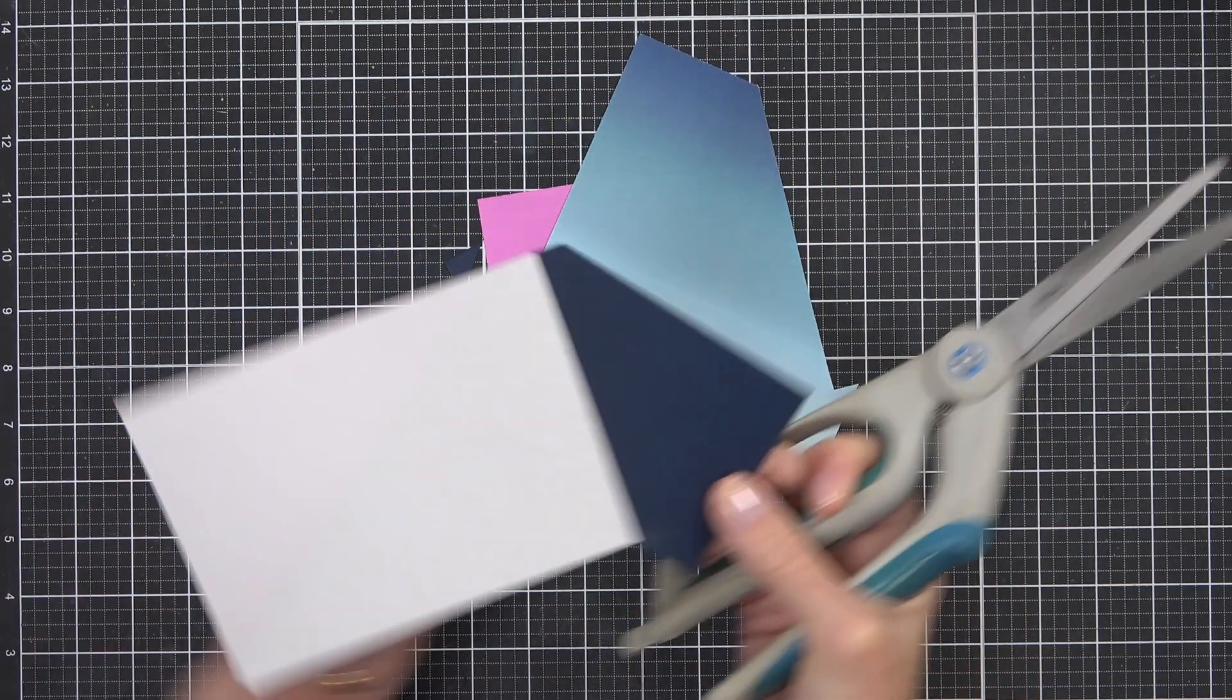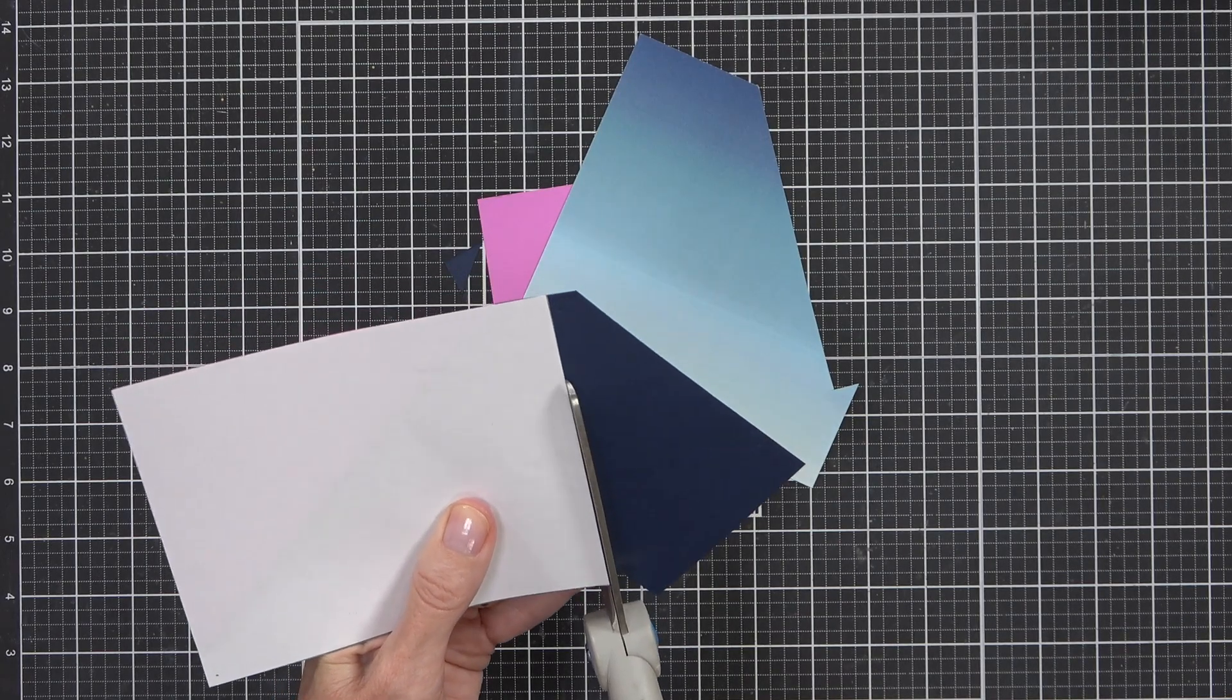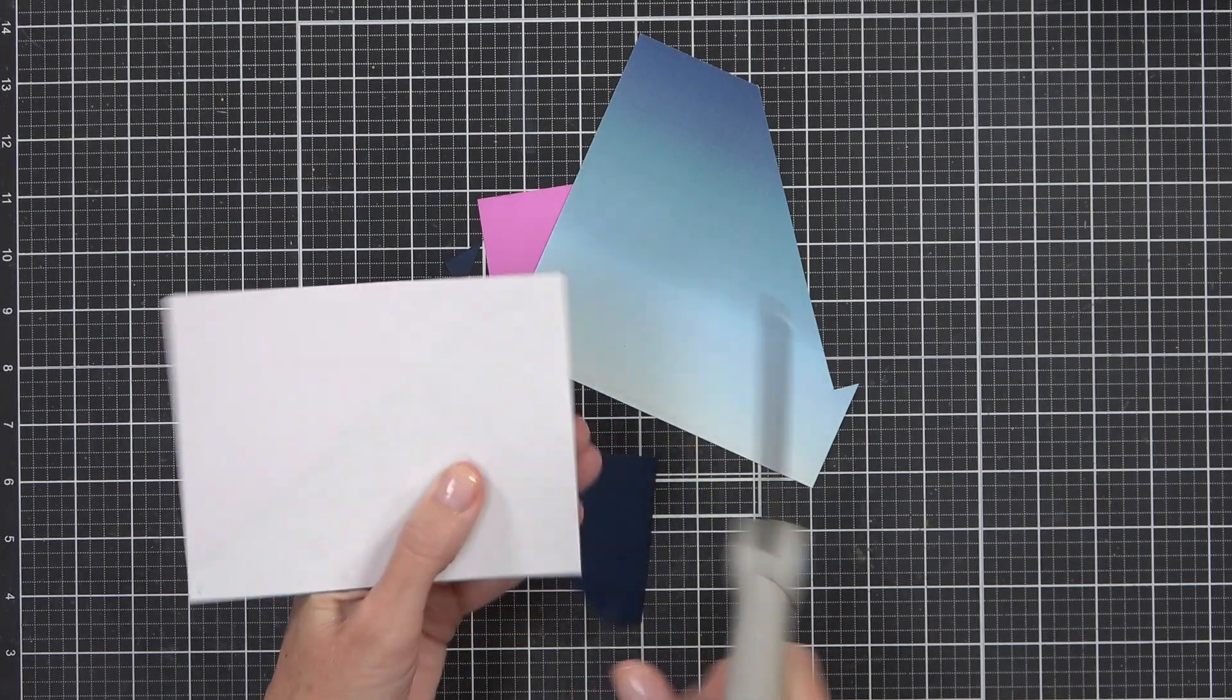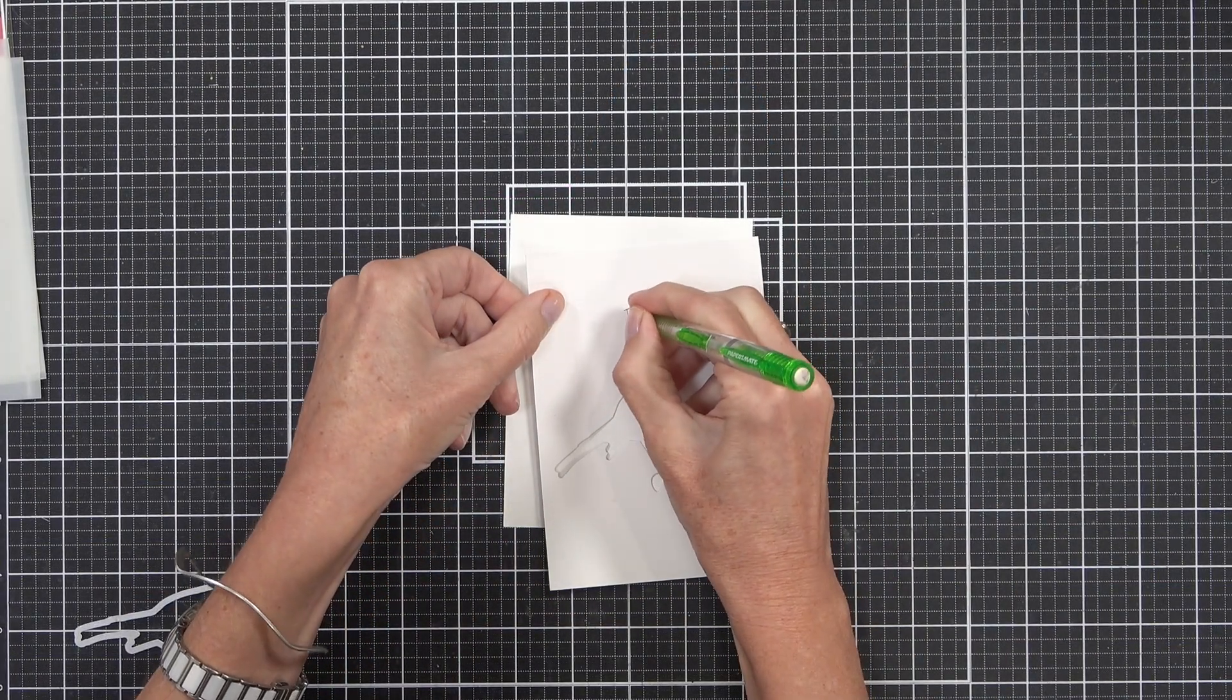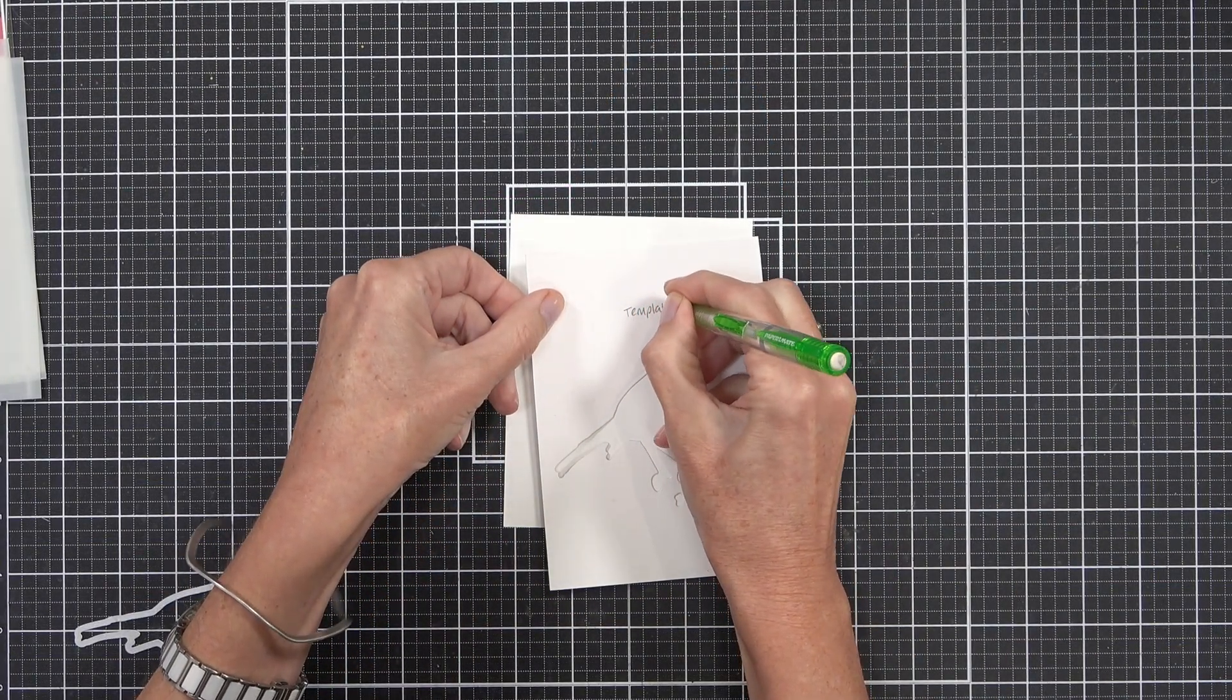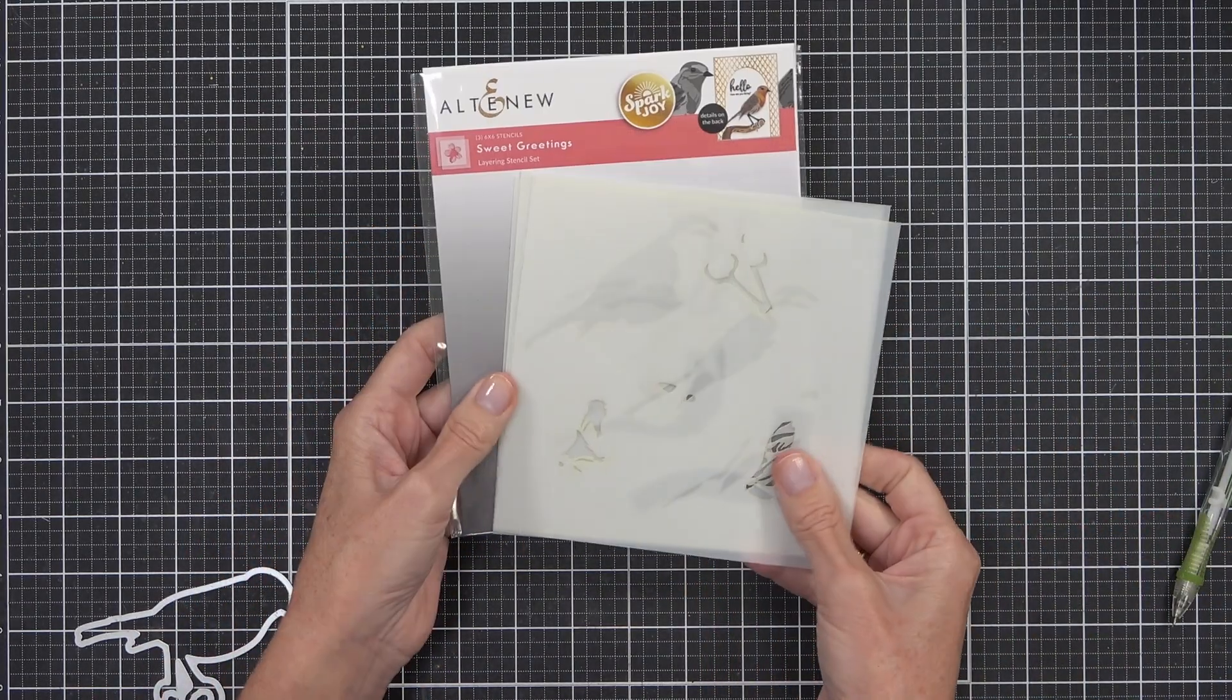Then I can just flip my whole panel over and use my scissors to cut it away. I'm not too worried that the edges aren't perfect because I am going to cut this down to fit on the front of my card with a border. I've used the add-on die to create a die cut template of the bird.